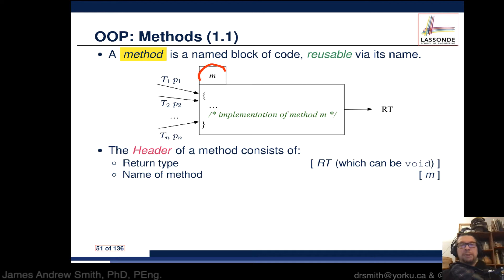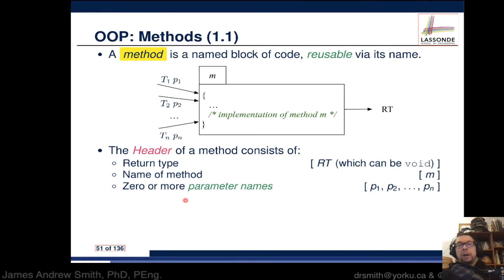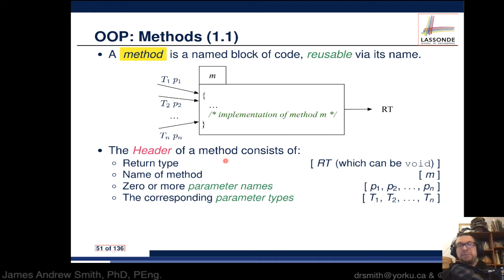The method name should signify what it does. You can have zero or more parameter names. These input parameters should have types - for example, a parameter might be an integer, floating point, or string.